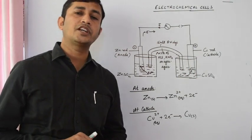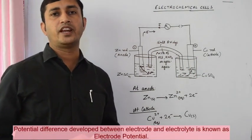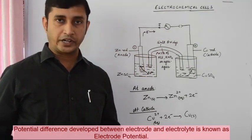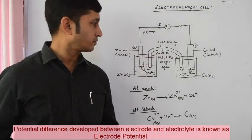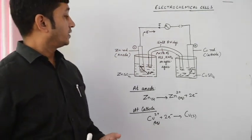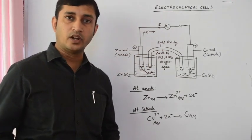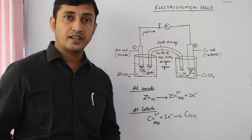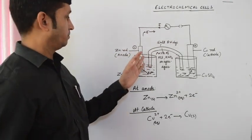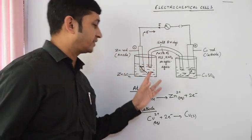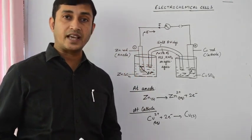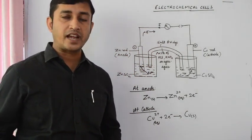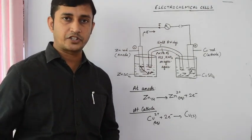This potential difference developed between the electrode and the electrolyte is known as electrode potential. If the concentration of the solution is one molar and the temperature is 298 Kelvin, that is standard state, then the electrode potential between the rod and the electrolyte is known as standard electrode potential. How to determine standard electrode potential we will see later today.